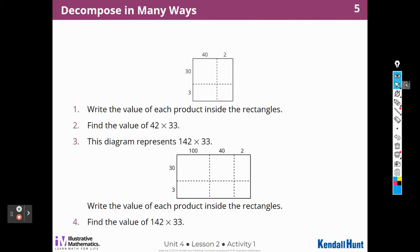And then I see 3 times 40 is 120. And then we use 30 times 2 is 60, and 3 times 2 is 6. That could help us find the product of 33 times 42 if we added all these numbers together. Now, it says write the value of each product inside the rectangles. Find the value of 42 times 33. Let's do that. So, again, they already showed us, but we can write it again. 3 times 4 is 12, and I have two tens there. So it's going to be 1,200.